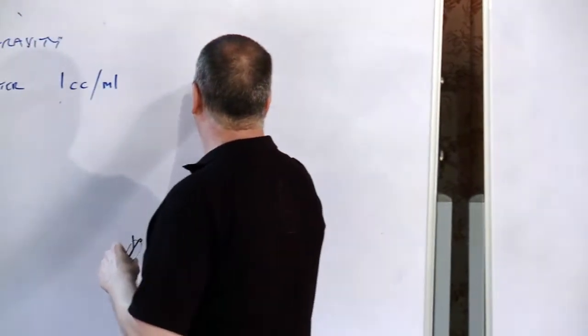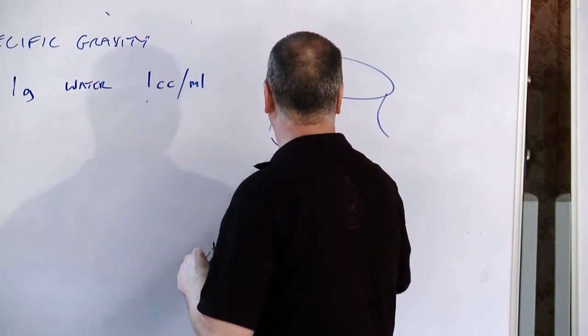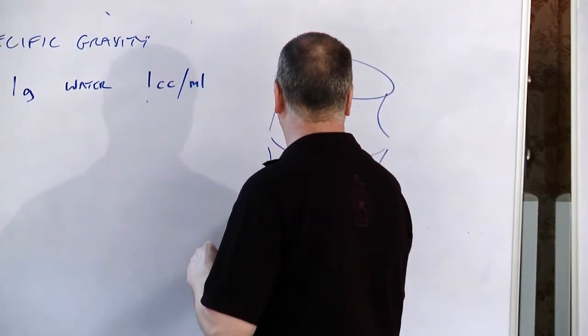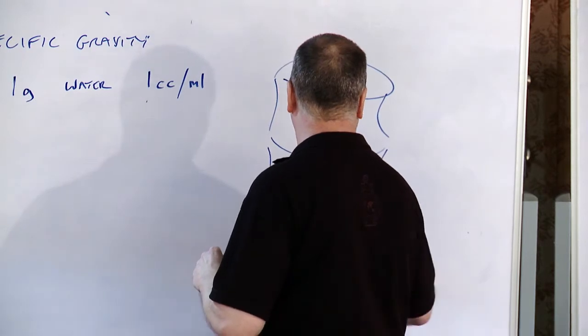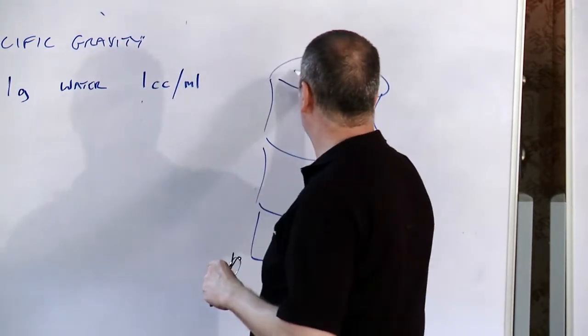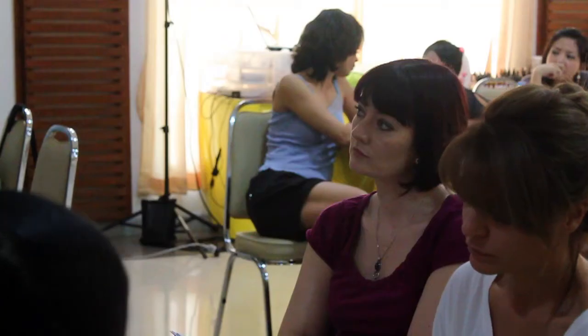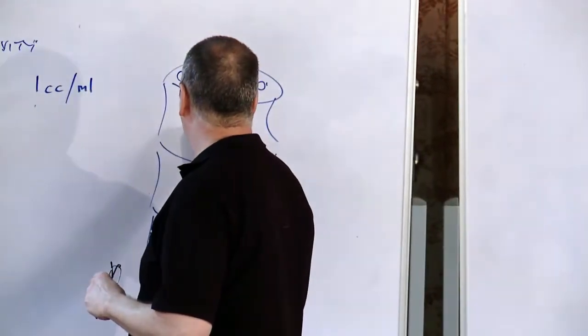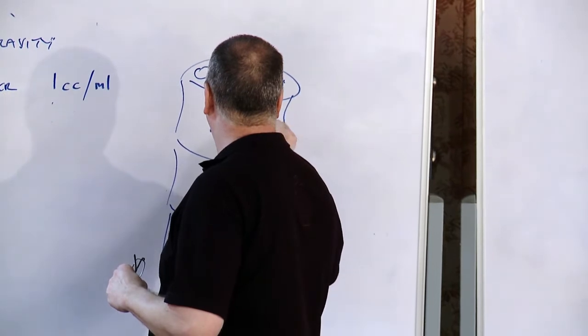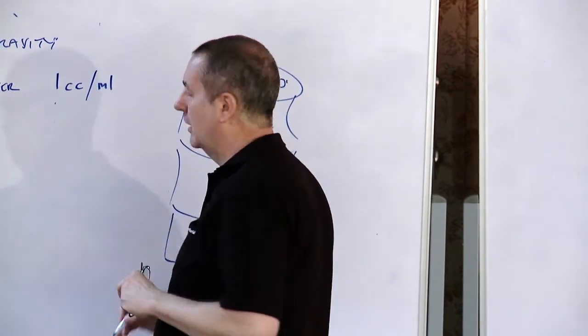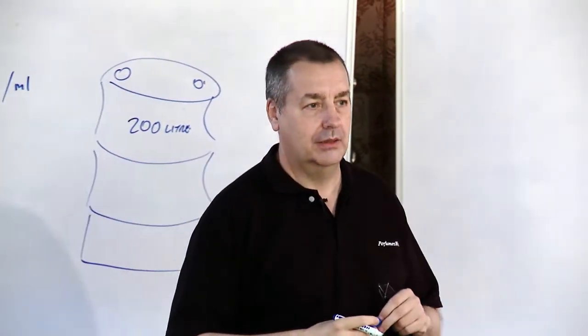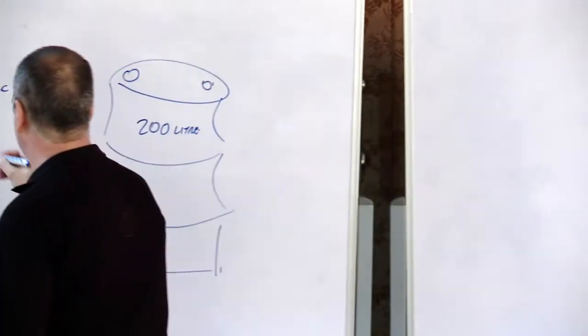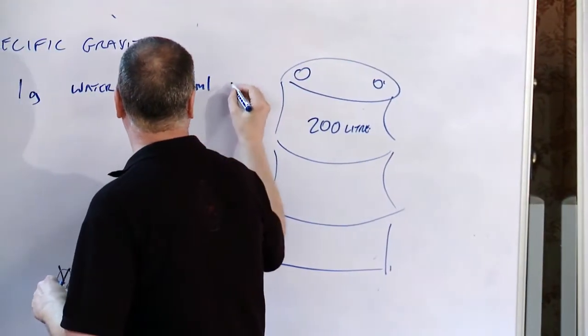So, in our 200 kilo drum, I've got a 200 kilogram, I'm going to say it's a 200 liter drum now. How much water can I get in there? Yeah, 200 kilos. So, I get 200 kilos of water.